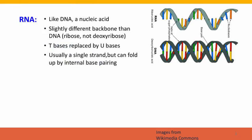First, RNA. RNA is, like DNA, a nucleic acid. It's made of subunits that are very similar to the subunits in DNA. The backbone is slightly different. The backbone of DNA is deoxyribose. The backbone of RNA is a molecule called ribose. As the name indicates, the only difference is that there's an oxygen on ribose that isn't in deoxyribose.